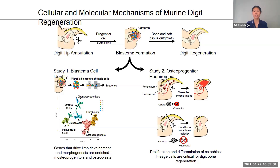However, there is evidence for digit tip regrowth following injury in humans, suggesting that we may possess an innate regenerative ability. To harness this ability, the mechanisms driving the regeneration of complex tissues must be better understood.